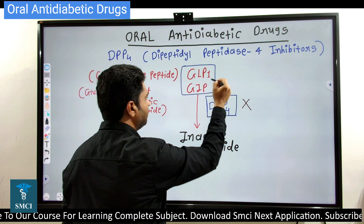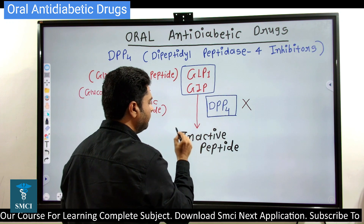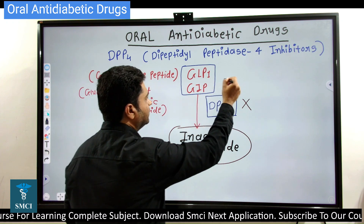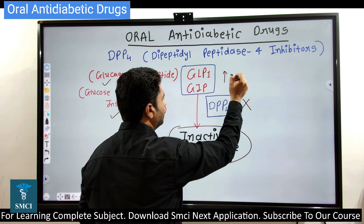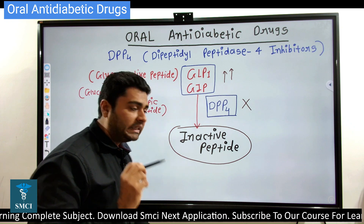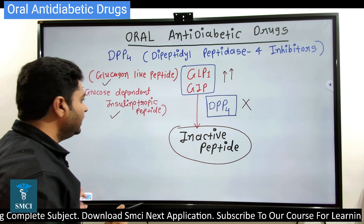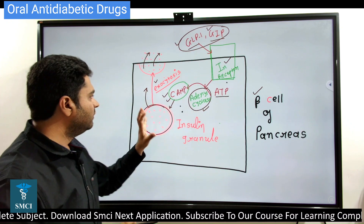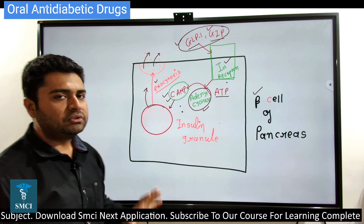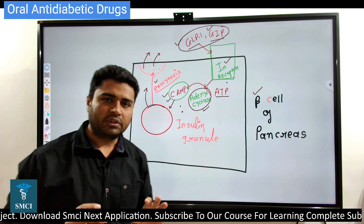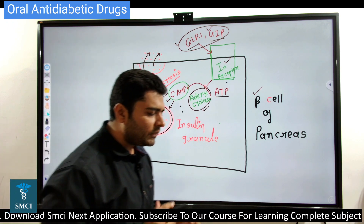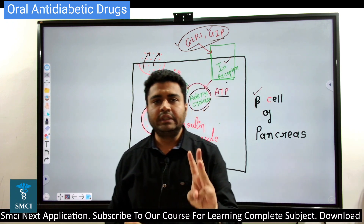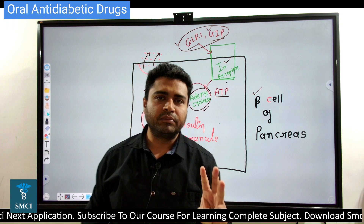So now you understand how these drugs work. DPP4 inhibitors inhibit the DPP4 enzyme so that GLP and GIP are not inactivated. The concentration of GLP and GIP increases, and ultimately they stimulate insulin release into the blood circulation.